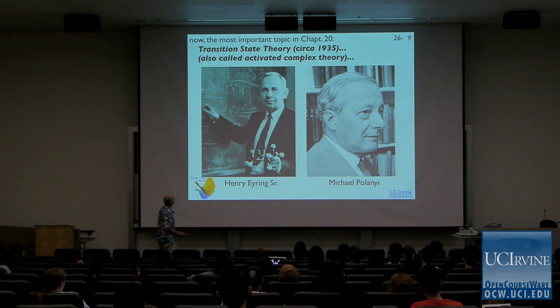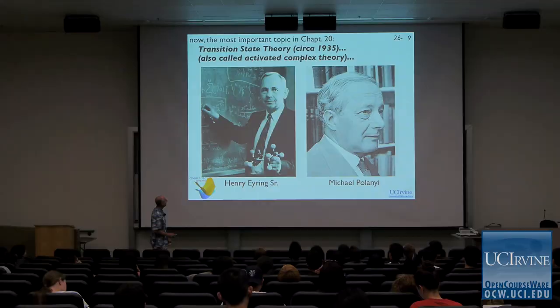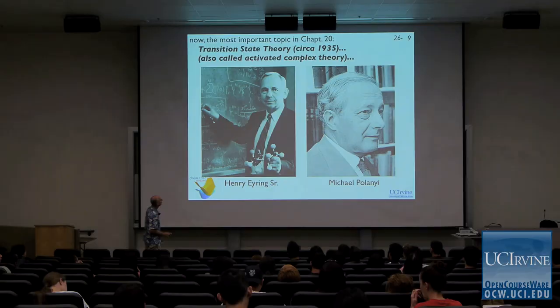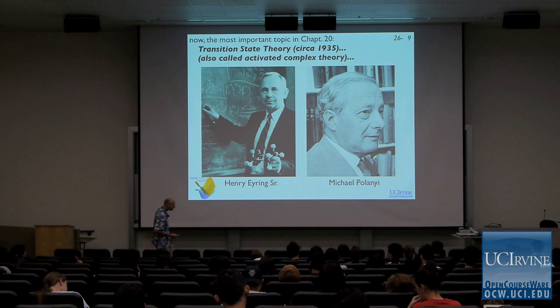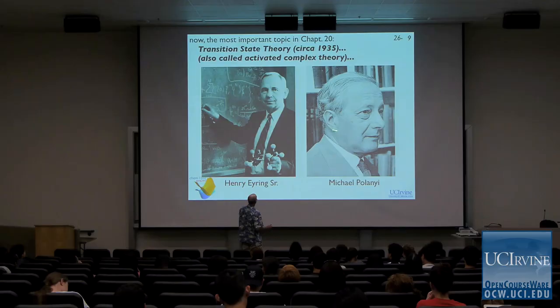I would love to spend 10 minutes talking to you about these two guys. Henry Eyring worked at the University of Utah for most of his career — one of the great American physical chemists of the 20th century. Michael Polanyi was a Nobel Prize-winning physical chemist. Both of these guys are responsible for what we're going to be talking about today: transition state theory. They worked it out in the 1930s.